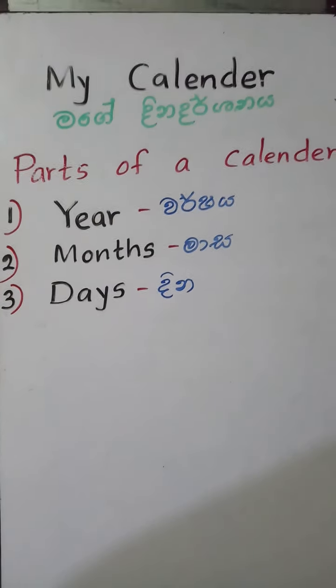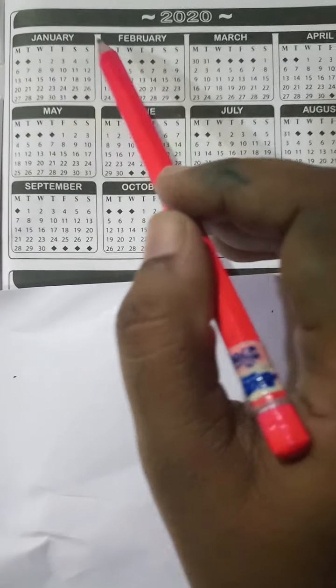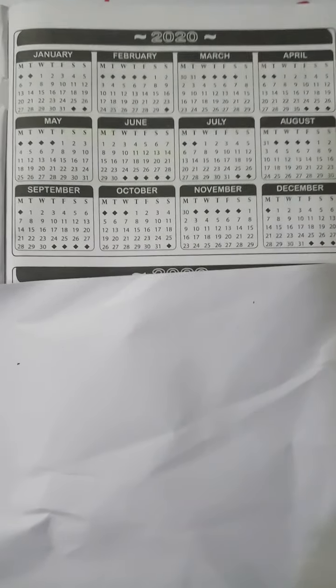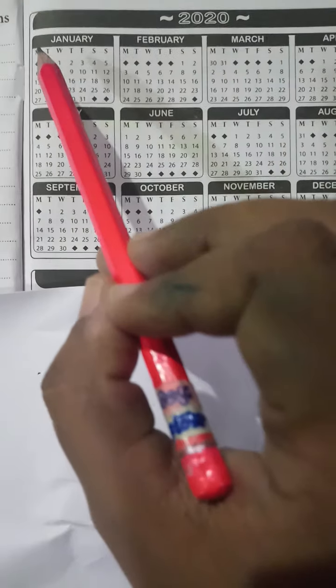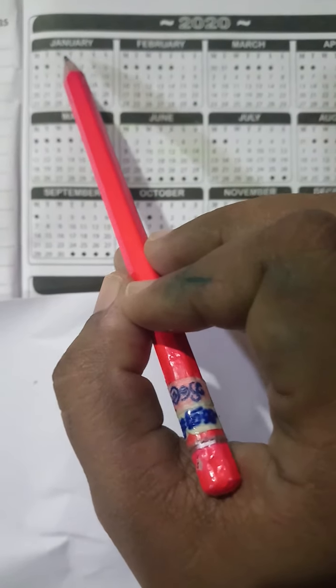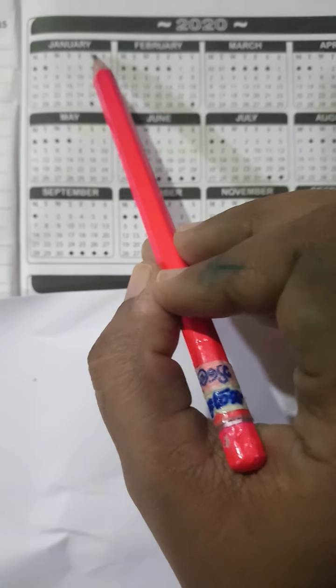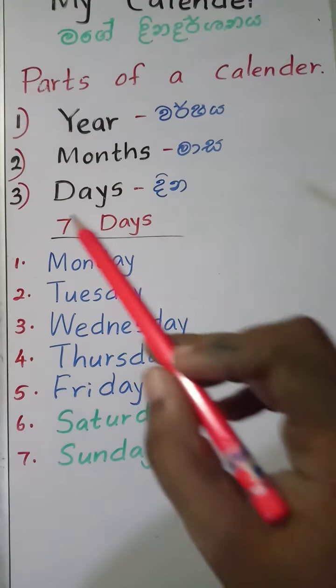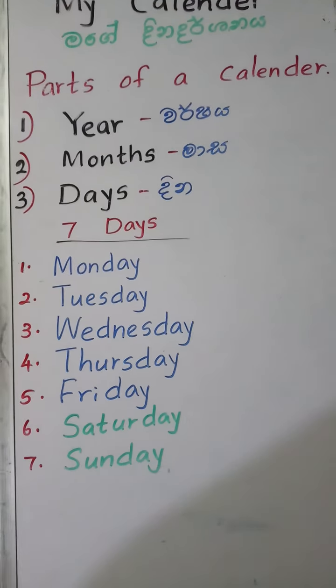Days. 3rd. Here are the days. There are seven days.